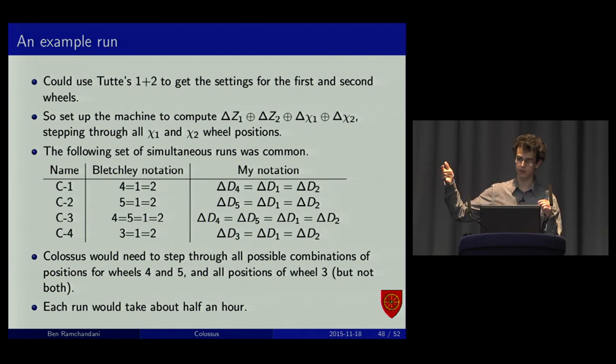It's an example run. If we use Tuts 1 to break in, we set up a machine like that to compare the first two bits. We can, if we're lucky, message is reasonably nice. We can work out what the first two chi wheel positions will be. Then, we can run several different tests in parallel, maybe, on the next run. And, again, with a bit of luck, we can find all three of the other chi wheels. So, we'll have all five wheels.